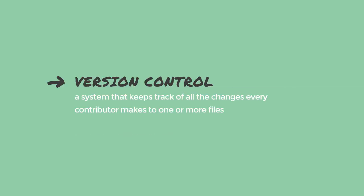To understand Git, you first need to know about version control. Version control is a system that keeps track of all the changes every contributor makes to one or more files, such as an HTML file.